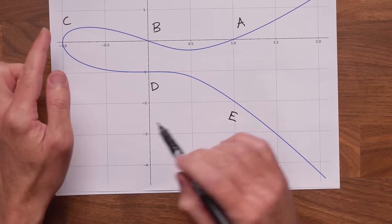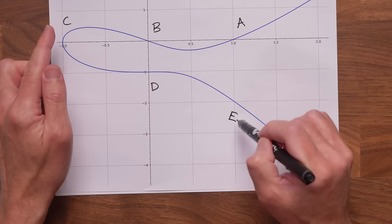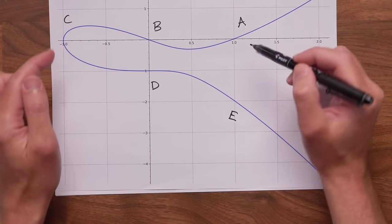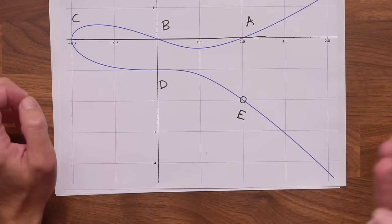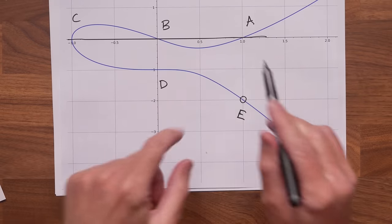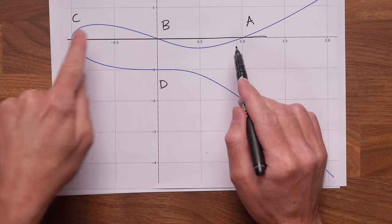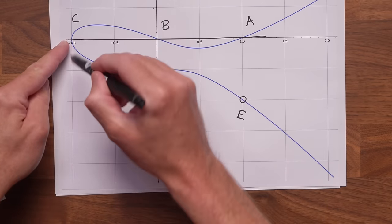Similarly, C plus D would be A. Every point has a unique vertical friend, except... And this is a little bit sad, perhaps, but the point C is its own vertical friend. So, for example, A plus B is C.